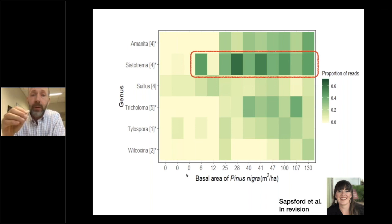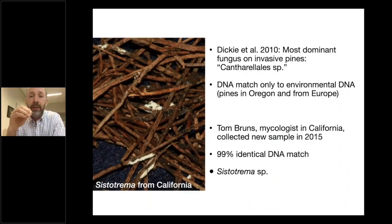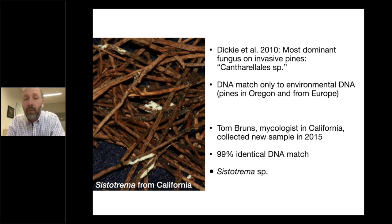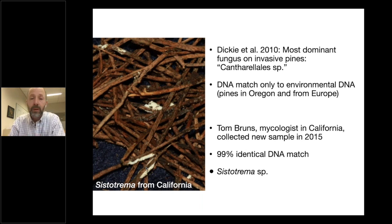Suillus is important as the first fungus that comes in, but it's not actually the dominant fungus. Once the pine invasion is established, what we're seeing is this really interesting fungus called Cystoderma. This was a real problem for us — we found this fungus back in the 2010 study, but at that point we couldn't identify it. When we put its DNA into the international databases, it only came back with a very poor match. But then a friend of mine, Tom Bruns, a professor in California, happened to be out collecting fungi and saw this little white crust on pine needles — and that turns out to be an almost perfect DNA match to the fungus that's invading in New Zealand. So we're now able to put a name on it as Cystoderma. It doesn't produce a mushroom you'd necessarily notice, but it's quite ubiquitous in the pine invasion.